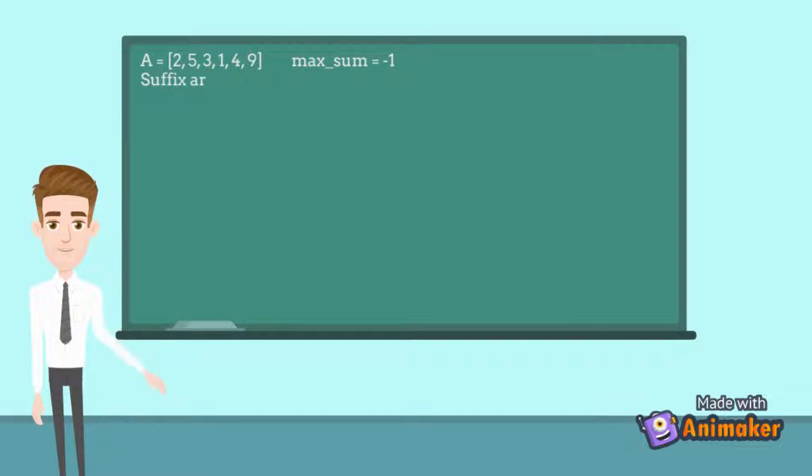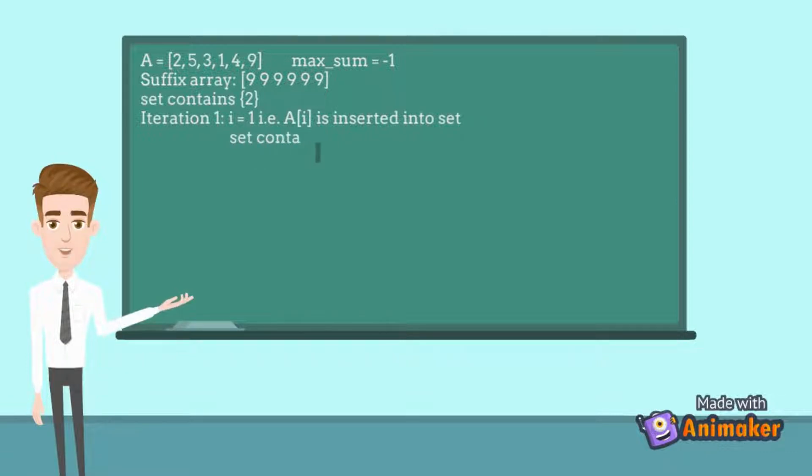Let's dry run over test cases. For this test case, our suffix will contain 5 times 9, and initially the set will contain the first element of array, that is 2. Now the for loop starts.